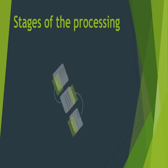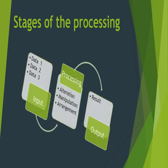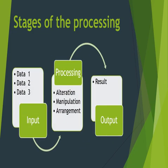Now let's talk about the stages of processing — how we are going to process our data. First, we take all the data as our input; there is a lot of data which we can use as input. Then we send all that input data for processing. In processing, we can alter our data — we can do some manipulation or arrangement. That arrangement can include sorting your data in ascending or descending order.